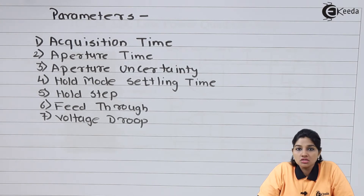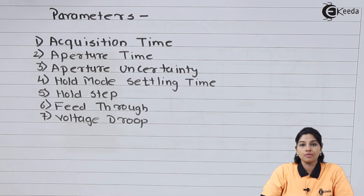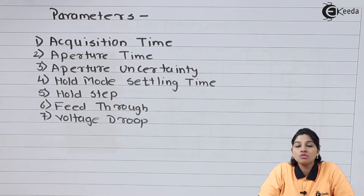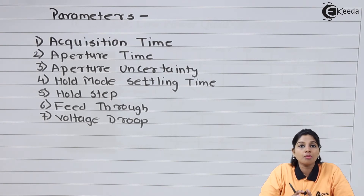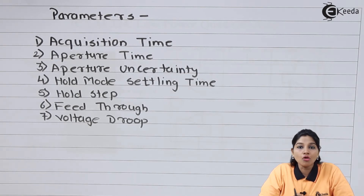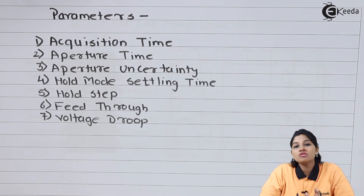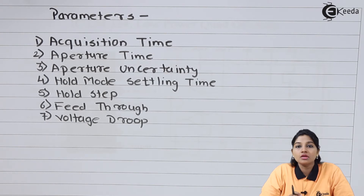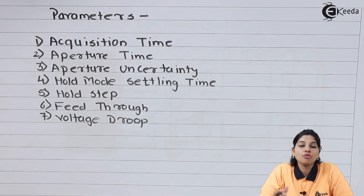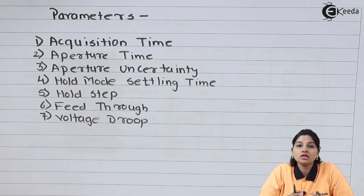The next parameter is hold mode settling time. As soon as the circuit receives the hold command, the capacitor should hold the value of voltage present across it. The hold mode settling time is defined as the time taken by the output voltage to settle within an error band. Depending upon which type of error band is used, the output will take a certain amount of time to settle.